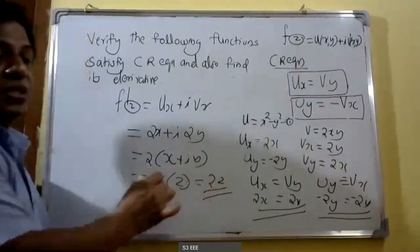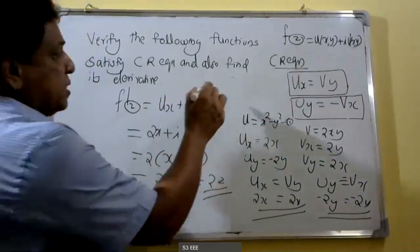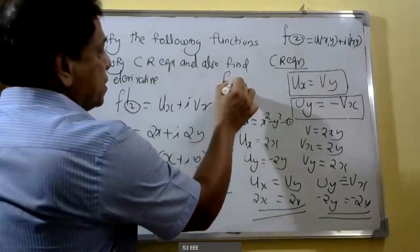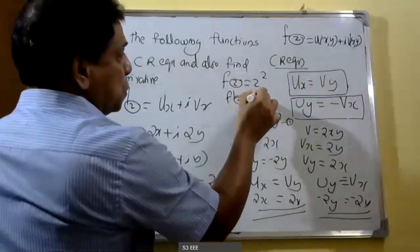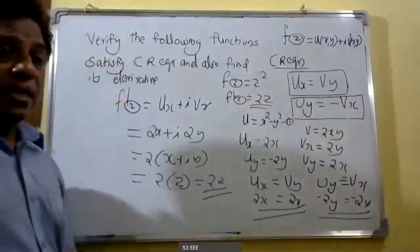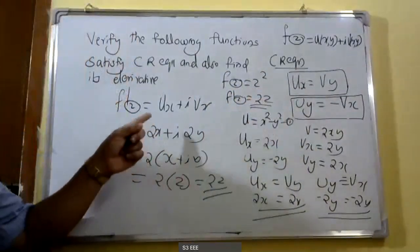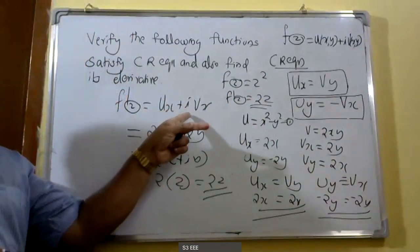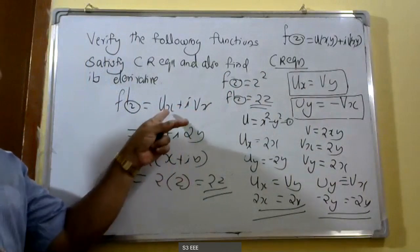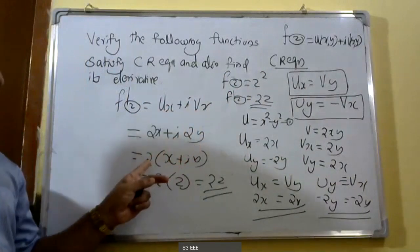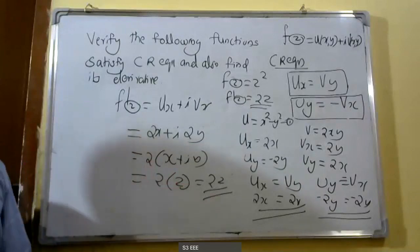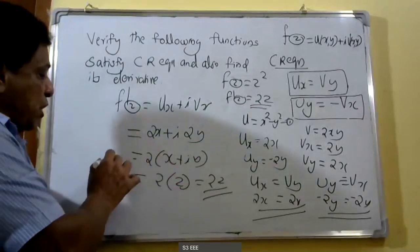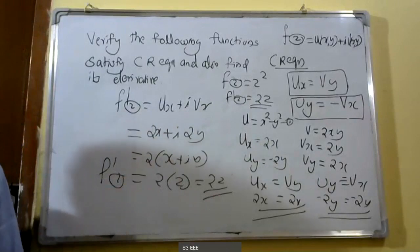Therefore the derivative f dash equals 2z. When simply differentiating f of z equal to z square, the derivative is 2z. We proved this by showing u_x plus i v_x, substituting the values of u_x and v_x, and showing that the result equals 2z. Therefore f dash of z equals 2z. This is the first problem.